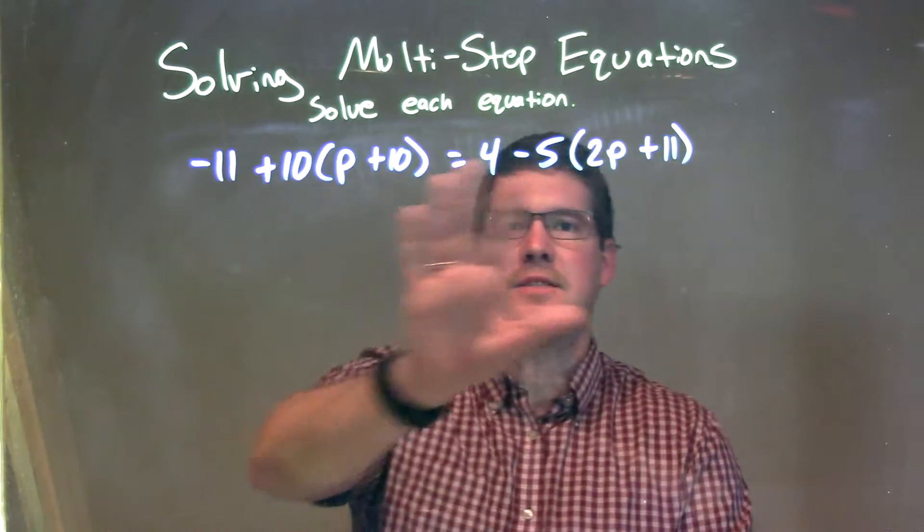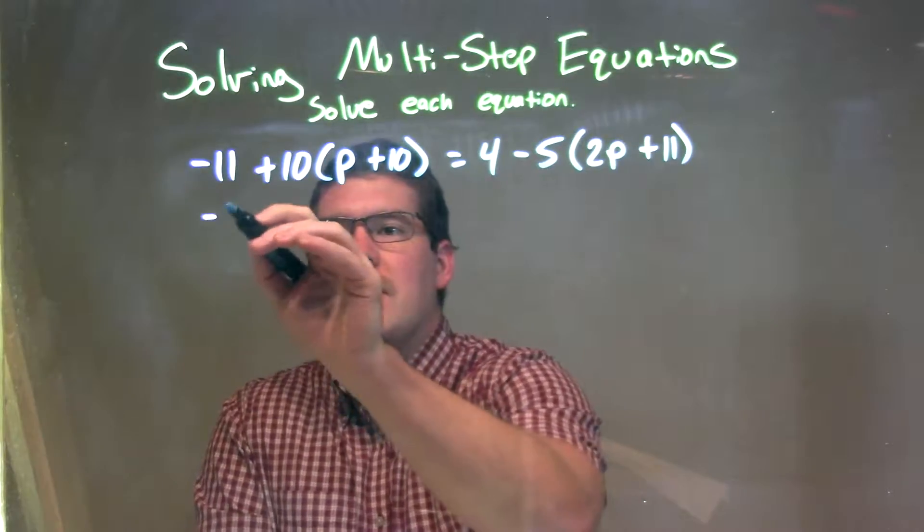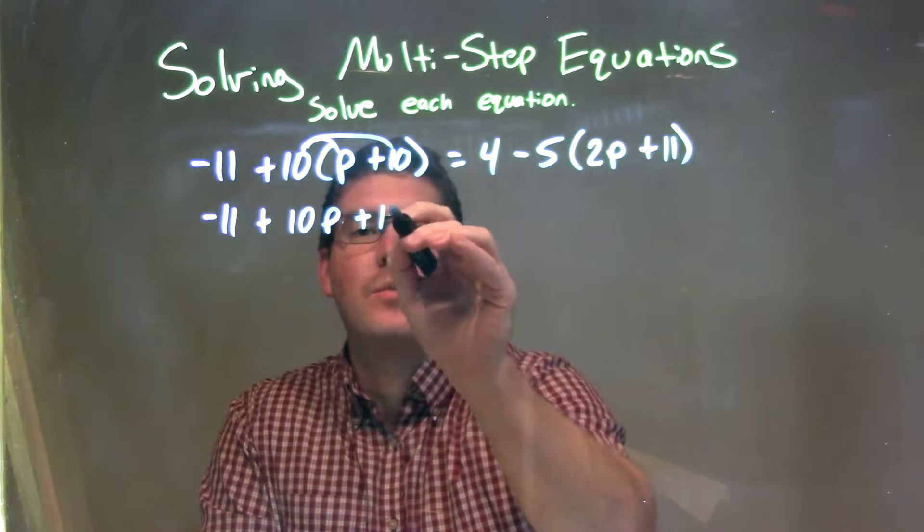What I want to do is simplify on each side of the equal sign. I need to distribute that 10 across here. I have negative 11 plus 10 times p, which is 10p, and 10 times 10 is 100.